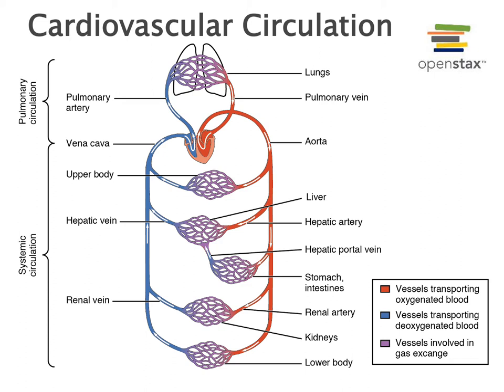Arterioles deliver blood into capillaries, which are the smallest blood vessels. Capillaries have very thin walls and are specialized for exchange — nutrients and waste move out of and into the blood at the capillaries. Blood then collects from the capillaries into venules, which are the smallest veins, and veins drain blood into the atria of the heart. The vena cava drains deoxygenated blood into the right atrium, while the pulmonary veins drain oxygen-rich blood from the lungs into the left atrium.